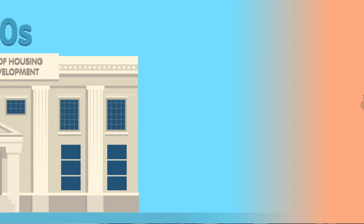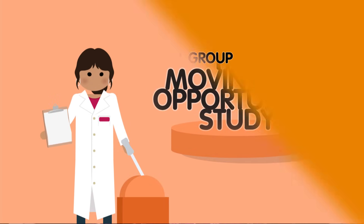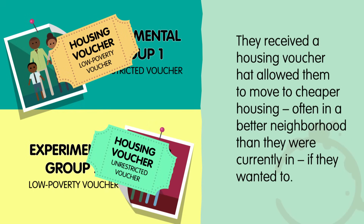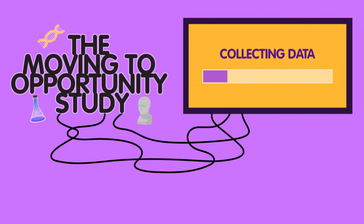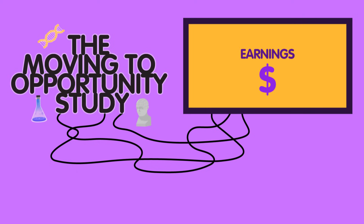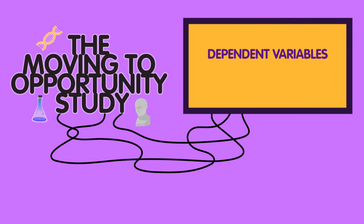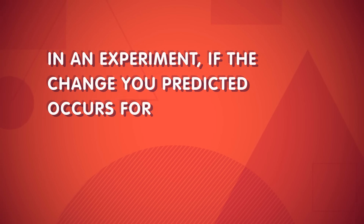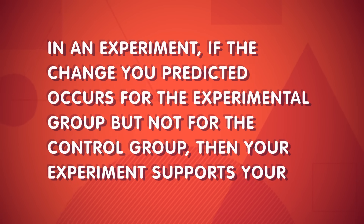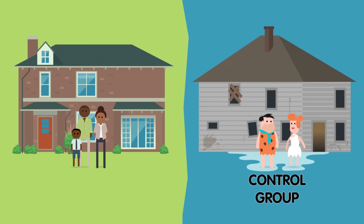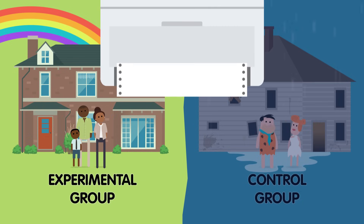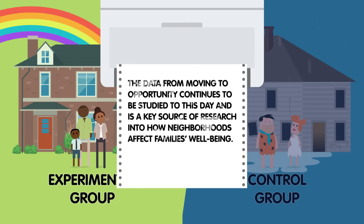In the 1990s, the U.S. Department of Housing and Urban Development conducted an experiment known as the Moving to Opportunity Study. In it, social scientists randomly assigned low-income families into a control group or one of two experimental groups. The control group had nothing changed in their environments, allowing for comparison with the experimental groups, who received a housing voucher that allowed them to move to cheaper housing, often in a better neighborhood, if they wanted to. Then a whole bunch of data was collected – and is still being collected – on many short- and long-term outcomes, including earnings, children's educations, and health outcomes. These outcomes are the experiment's dependent variables, while the independent variable was receiving the voucher or not. If the change you predicted occurs for the experimental group but not for the control group, then your experiment supports your hypothesis. One of the findings: those who received a voucher had better mental health outcomes, such as lower rates of depression, than those who didn't. The data from Moving to Opportunity continues to be studied to this day and is a key source of research into how neighborhoods affect families' well-being.